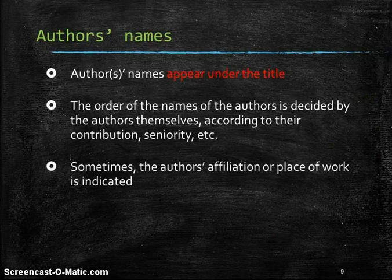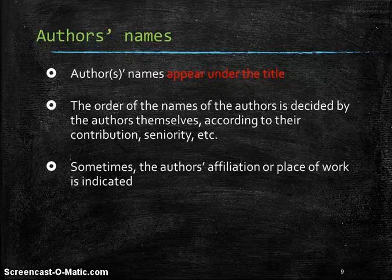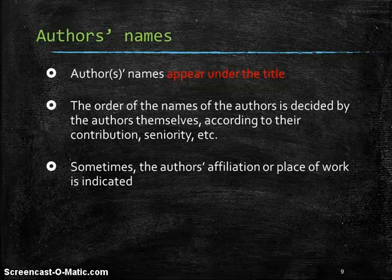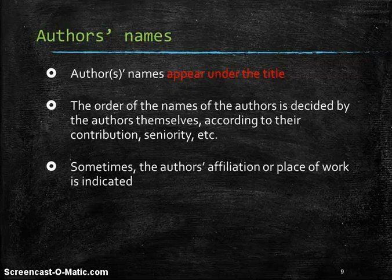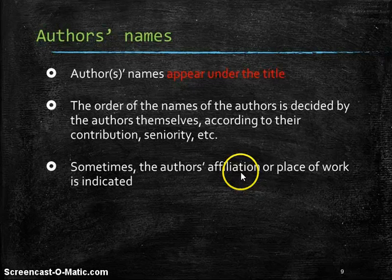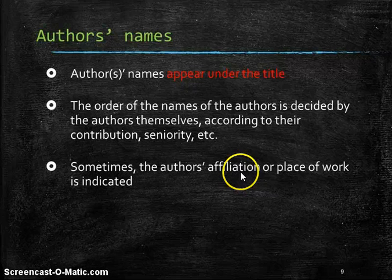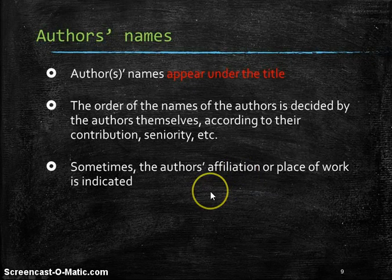Next we're going to look at the author's names, and these always appear under the title. The order of the authors depends on the order that the authors themselves decided on. And the first name is usually the main contributor or the senior writer. And sometimes underneath that, we have a little bit about the author's affiliation or where the author comes from. And today, more and more international research goes on. So we may have an author from Rupin in Israel and an author in Boston at Harvard University. The wonders of Internet.